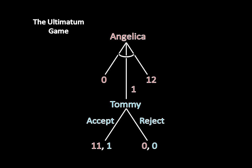Finally, we need to check to see if Angelica has any incentive to deviate from this strategy. Could she do better by demanding 10 cookies? Well, here Tommy is still going to accept — 2 is greater than 0. But Angelica only gets 10 here, which is strictly worse than what she did before. Thus, this isn't a profitable deviation. And in equilibrium, Angelica offers Tommy just 1 cookie. Tommy accepts, and Angelica gets 11.